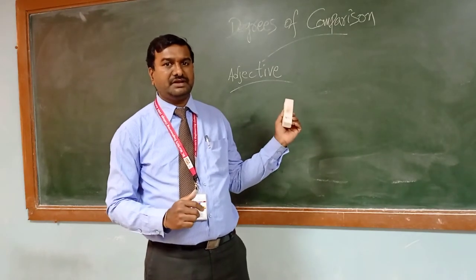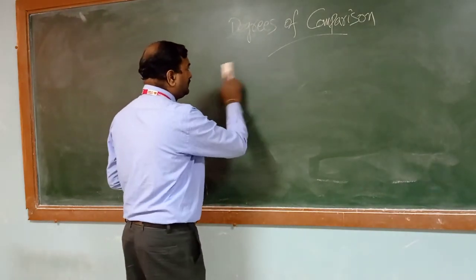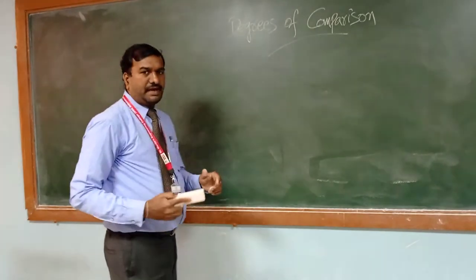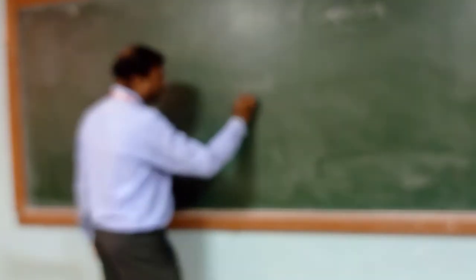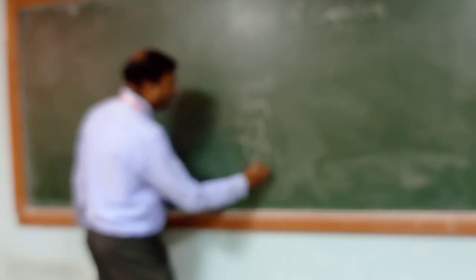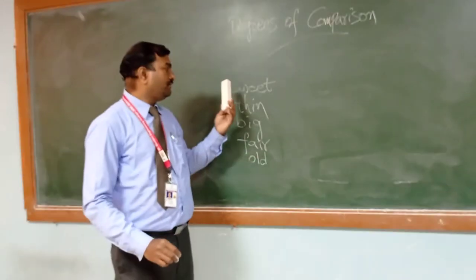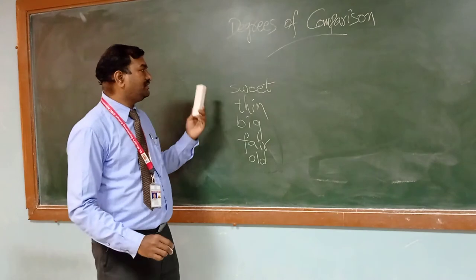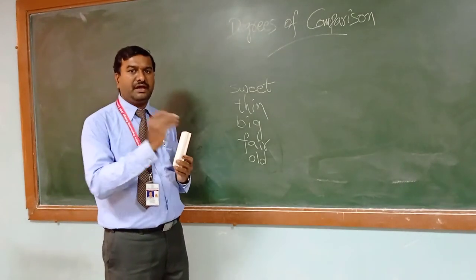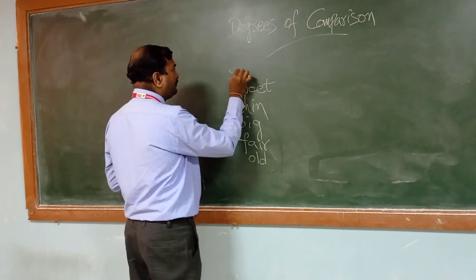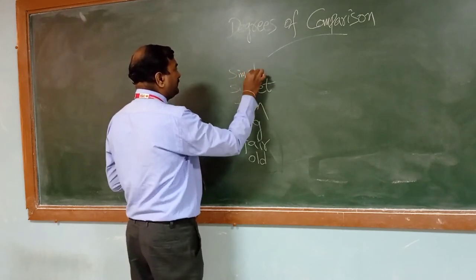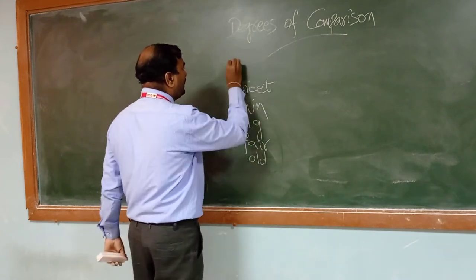We can also have comparison among adverbs. Examples for adjectives: sweet, thin, big, fair, old. These are examples in base form — they just describe the mere quality of a noun or pronoun. So these adjectives are known to be in the positive degree.